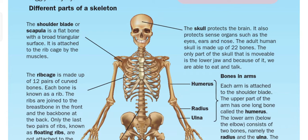The next part is the shoulder. The shoulder blade, or scapula, is a flat bone with a broad triangular surface and it is attached to the rib cage by the muscles.